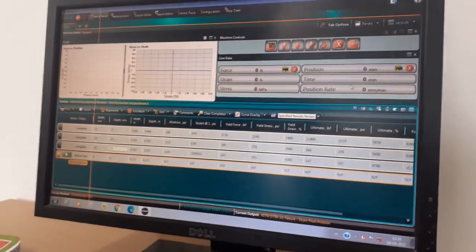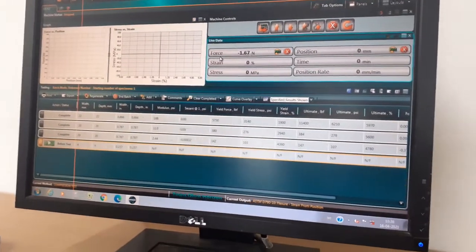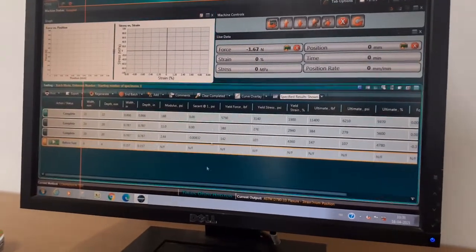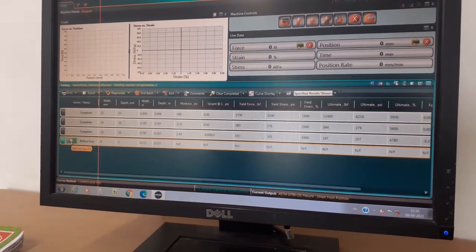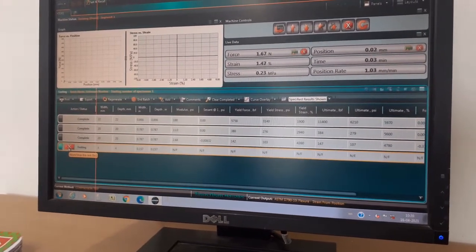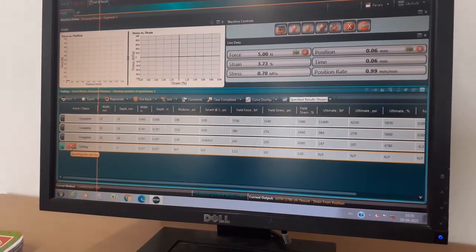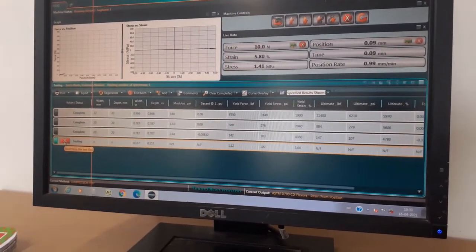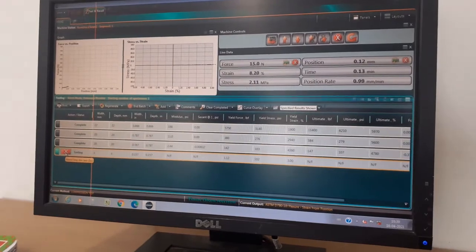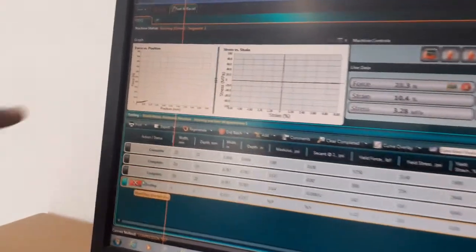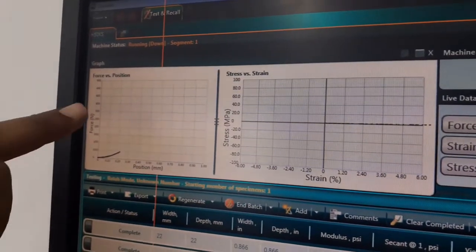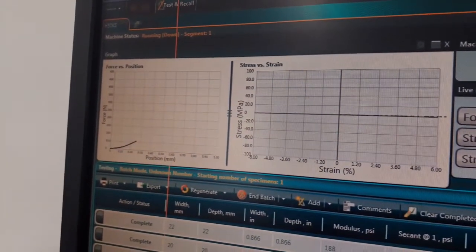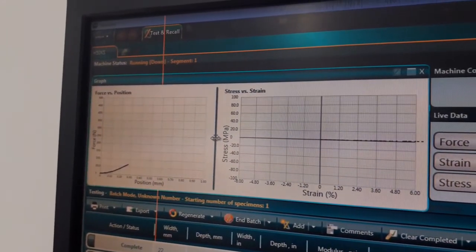All values here are at zero: force and position. Now we start the test. The graph will rise slowly. This graph is for the force versus position.